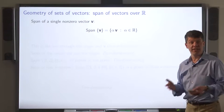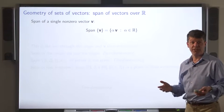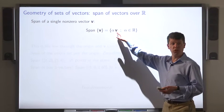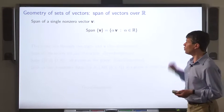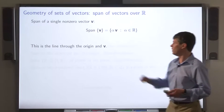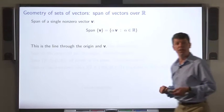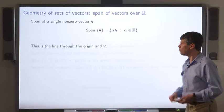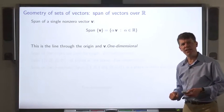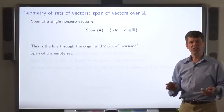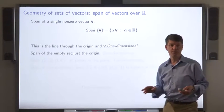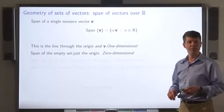What about the span of a set that contains only one vector? That's the set of all scalar multiples of that vector, which we saw earlier is the line through the origin and the point corresponding to that vector — a one-dimensional structure. What about the span of the empty set? We saw that this is just the origin, a zero-dimensional object.